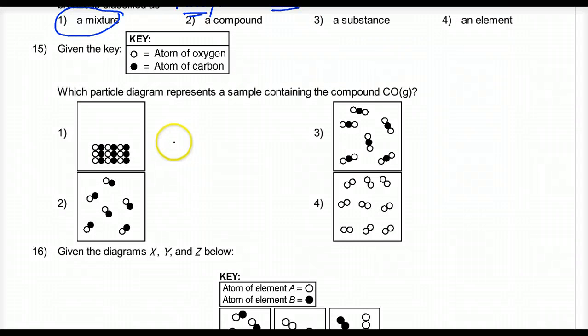Which particle diagram represents a sample containing the compound CO? Carbon monoxide. That's one carbon to one oxygen. That's the same element. That's two to one ratio. Here we go. By the way, this is a solid. Remember that? Look at that. That's a regular repeating arrangement. A crystal. Here's a gas. Notice the distance between. One to one ratio. So two is the best answer.